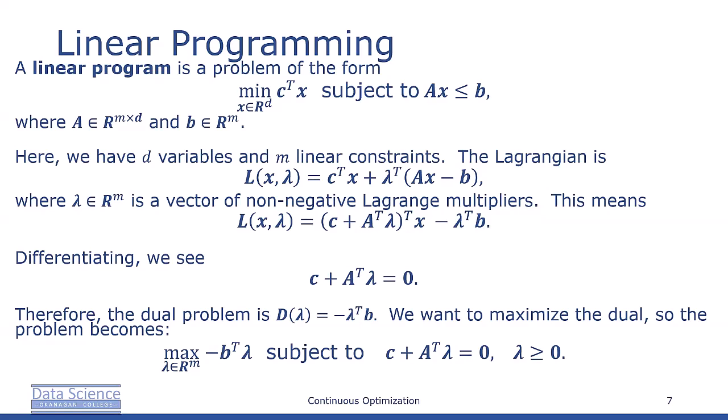This is also known as a linear program but with m variables. We have the choice of solving the primal or the dual program depending on whether m or d is larger. Recall that d is the number of variables and m is the number of constraints in the primal linear program.